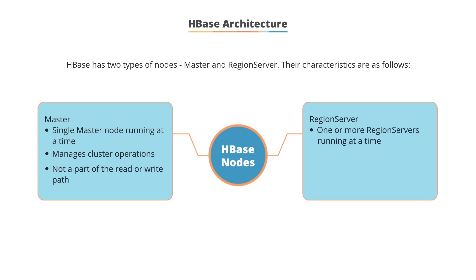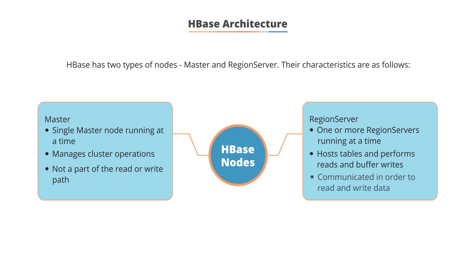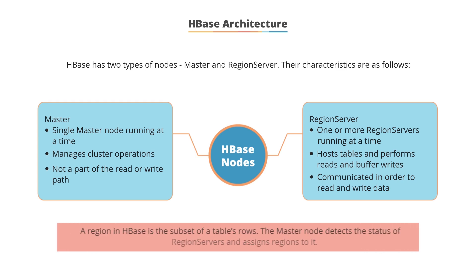The region server has one or more region servers running at a time. It hosts tables, performs reads and writes of data. Clients communicate with the region server in order to read and write their data. A region in HBase is a subset of a table's rows. The master node detects the status of region servers and assigns regions to them.